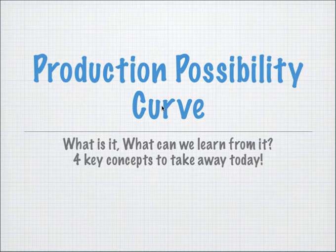Welcome to the first lesson for microeconomics. This is going to be the first of many videos that I'm going to do, taking a simple diagram as a starting point to explain the concepts you need to know in H2 microeconomics. Today the first diagram I'm going to look at is the production possibility curve — what is it, what can we learn from it, and four key concepts you can take away today.